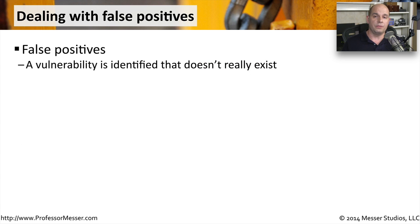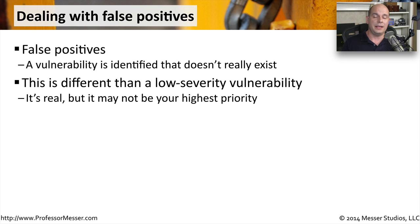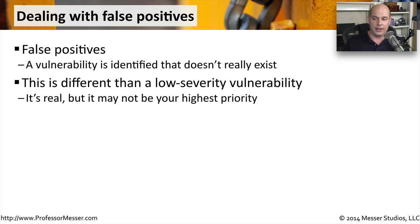If you're going through the results of your vulnerability scan and notice some information is not quite correct, you may have run into a false positive. A false positive is when the scanner identifies a vulnerability, but in reality that device is not vulnerable to that particular issue — it absolutely does not exist on that computer. That's different from a low-severity vulnerability, like an open port number, which may not be a big problem but still exists. Don't confuse a low-severity issue with an actual false positive.